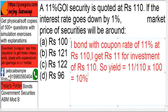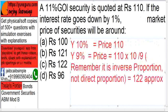Now the interest rate goes down by 1%, so this 10% yield goes down to 9%. When yield was 10%, price was 110. Now if yield is 9%, using inverse proportion — multiply top by top and divide by bottom — the price comes out to be approximately 122.